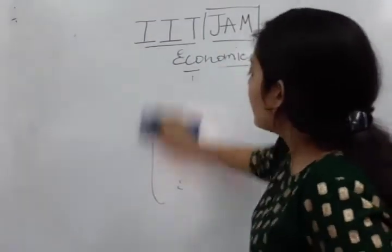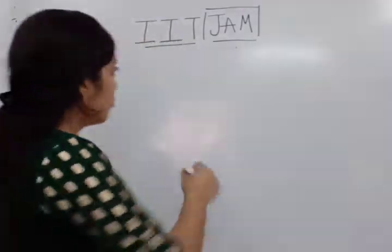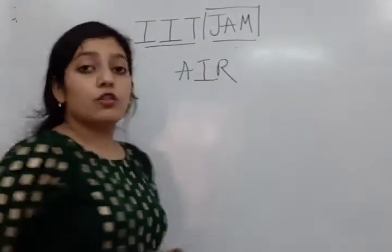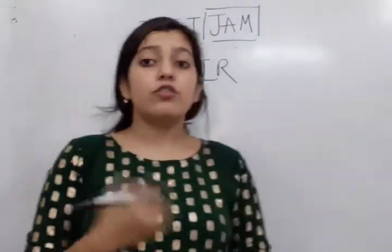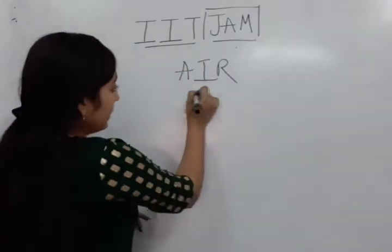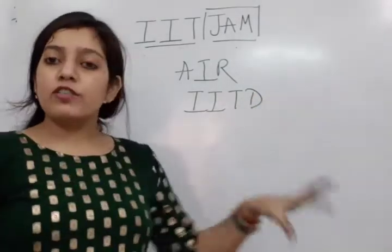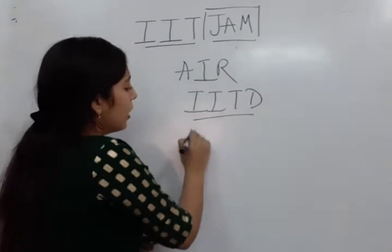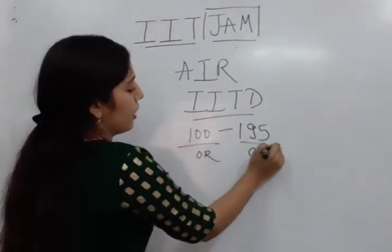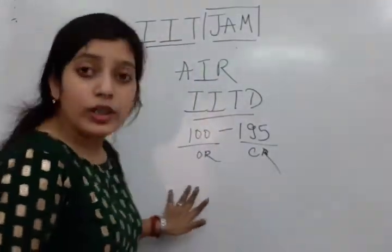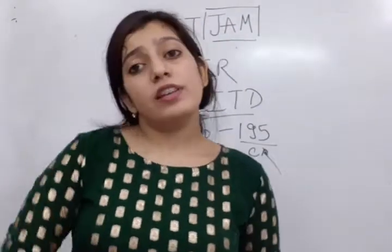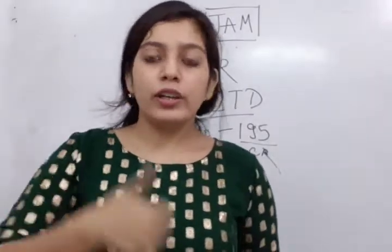Regarding selection, candidates who appear and clear the examination are given an AIR rank — All India Ranking. Institutions then bring out their opening and closing ranks. For example, IIT Delhi may take students ranked 100 to 195. A candidate whose rank falls within that range can apply and get admitted. Each institution announces its own opening and closing rank.